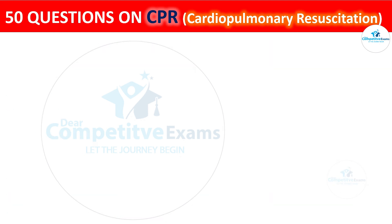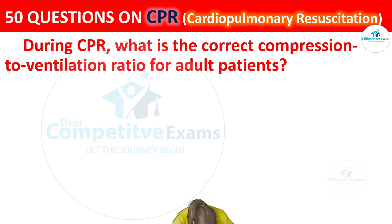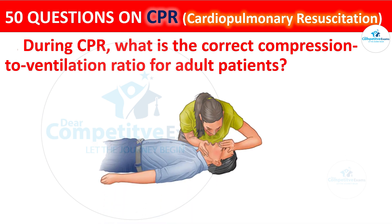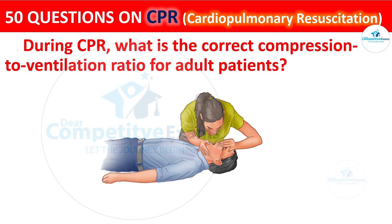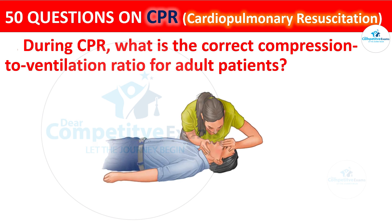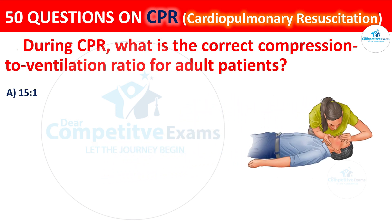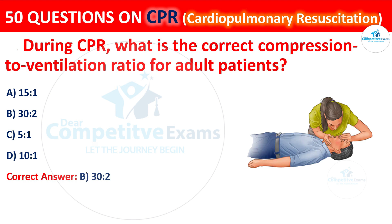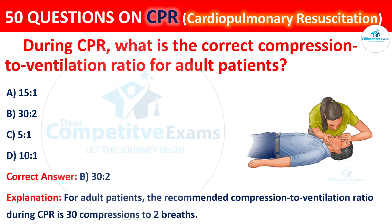Question 43: During CPR, what is the correct compression-to-ventilation ratio for adult patients? The options are: 15:1, 30:2, 5:1, or 10:1. The correct answer is B — 30:2. For adult patients, the recommended compression-to-ventilation ratio during CPR is 30 compressions to 2 breaths.